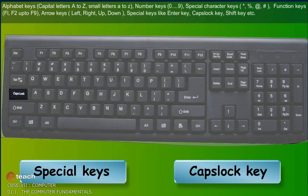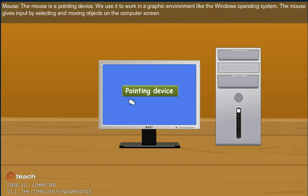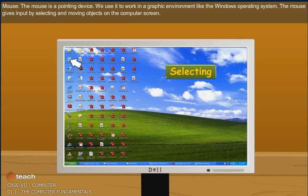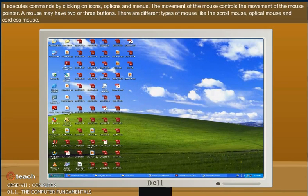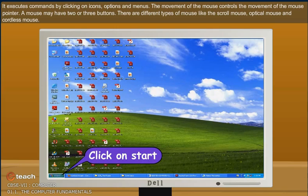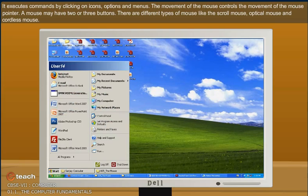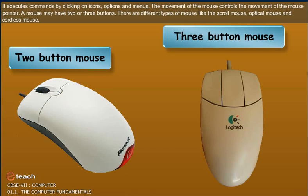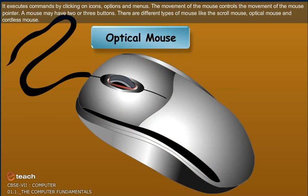Mouse: The mouse is a pointing device. We use it to work in a graphic environment like the Windows operating system. The mouse gives input by selecting and moving objects on the computer screen. It executes commands by clicking on icons, options and menus. The movement of the mouse controls the movement of the mouse pointer. A mouse may have two or three buttons. There are different types of mouse like the scroll mouse, optical mouse and cordless mouse.